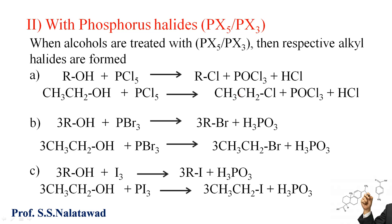The next type is with phosphorus halide — either phosphorus pentahalide or phosphorus trihalide. When alcohols are treated with phosphorus pentahalide or phosphorus trihalide, the respective alkyl halides are formed. The first reaction is alcohol reacting with phosphorus pentachloride to form alkyl chloride, POCl3 (phosphoryl chloride), and HCl. This is the general reaction. For example, ethanol reacts with phosphorus pentachloride.